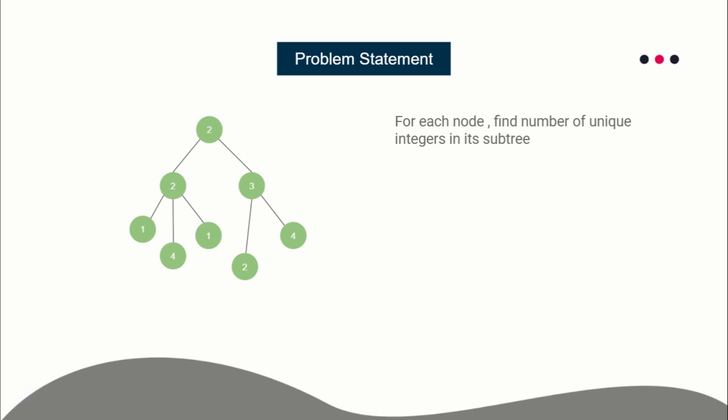If you haven't watched the previous lecture of the DP on tree course series, I highly advise you to go and watch it, because this is basically a continuation from the previous lecture of the tree algorithms DP on tree series. I'll be putting the link of the course in the description of the video so you can check out the lecture just before this. Okay, so that is the problem statement.